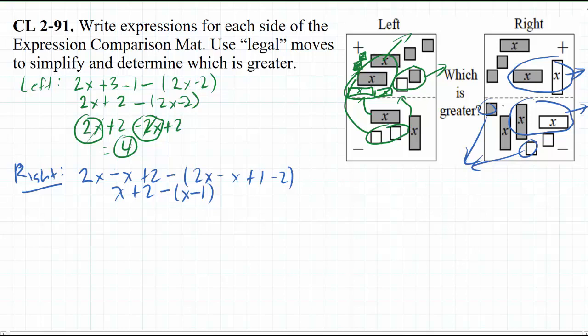I'm going to go ahead and flip the tiles over. So this tile I'm going to flip up here, that's going to be a negative x. This tile I'm going to flip up here and that's going to be a positive unit. So what do we have left? Well, again, we distribute that negative. So x plus 2 minus x plus 1.